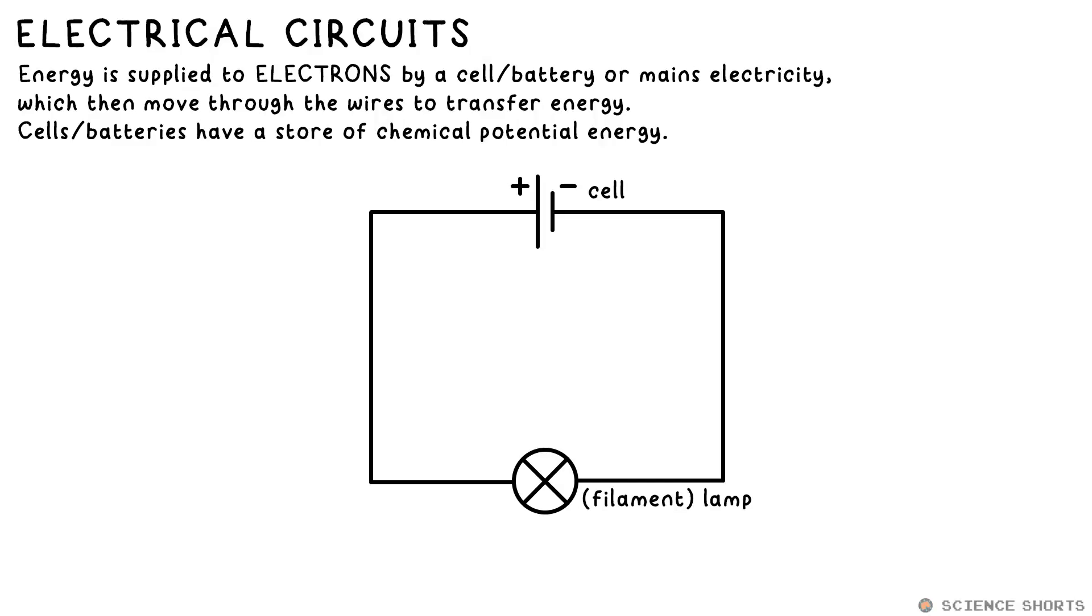Electricity is the flow of charge or charges like electrons. They carry energy from a source of energy like a battery that has a store of chemical potential energy to a component like a bulb where the energy is released as another type of energy, light in this case.